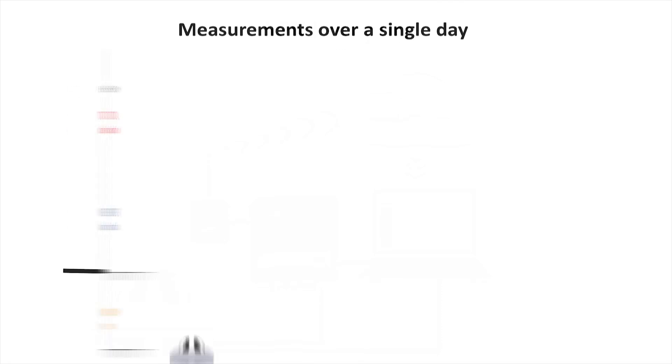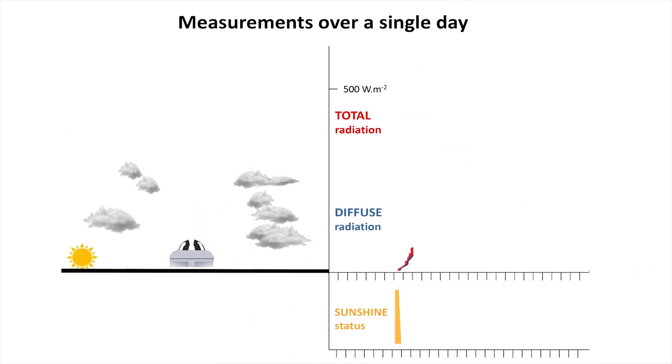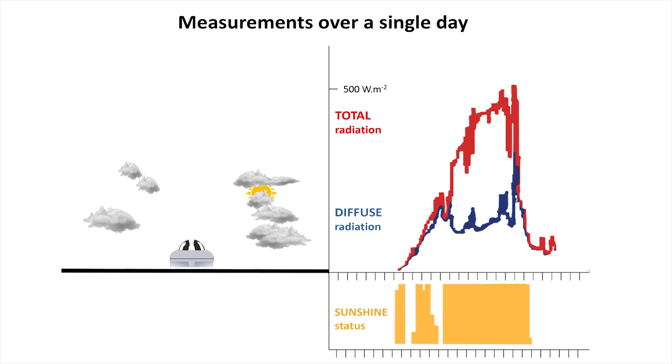Let's look at the SPN1 in action over 12 hours. The radiation and sunshine status data can be seen on the right of the screen as the sun rises and descends through clouds.